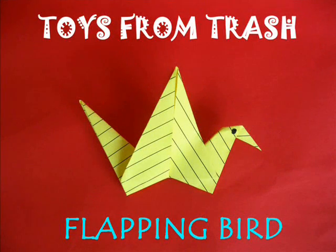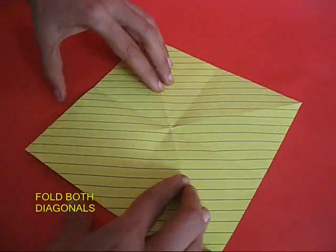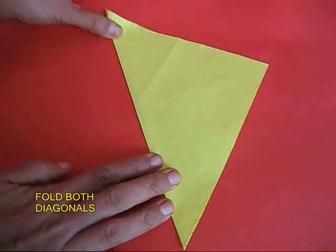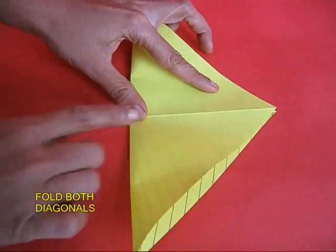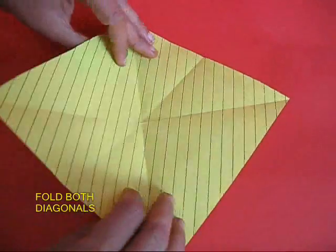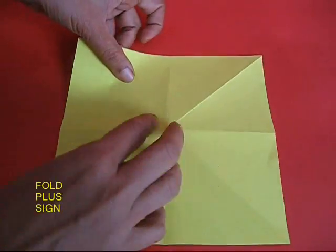This marvelous flapping bird has been made by children in Japan for the last 300 years. Take a square piece of paper and fold a criss and a cross. It is like a multiplication sign.